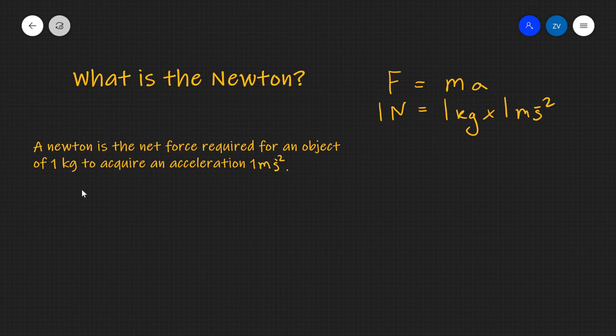So one Newton is going to be one kilogram times one meter per second squared of acceleration. So in other words, a Newton will be the net force required for an object of one kilogram to acquire an acceleration of one meter per second squared. And incidentally, this is also the base unit for the Newton. So the base unit is kg m s to the power of minus two.